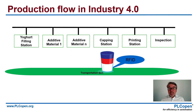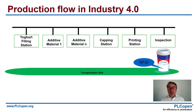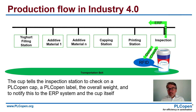At the capping station, we add a cap — a PLC Open cap in this case. And at the printing station, we add the PLC Open label. Last but not least, we do the inspection where we check if everything is done: we check the weight, we check if there's a cap, and we can do all kinds of checks there. We send that information up to an ERP system and down to the cup itself, so in the end I can check what was really done to my order.